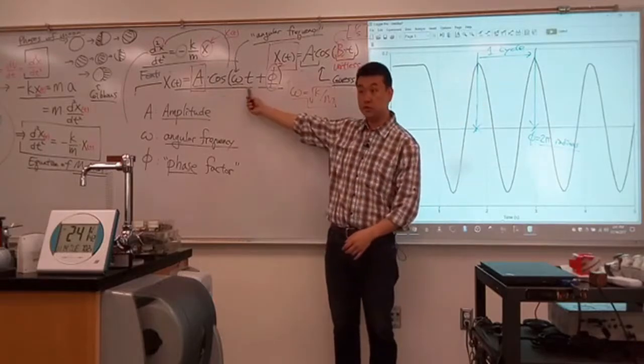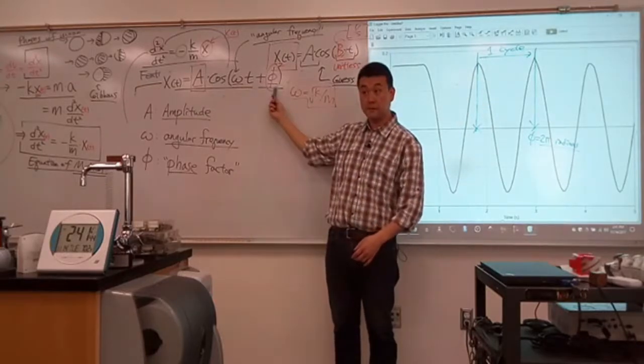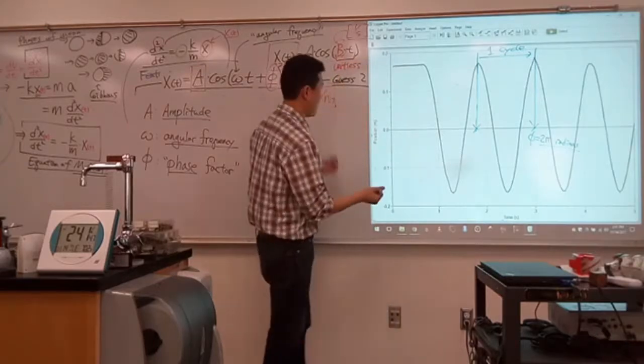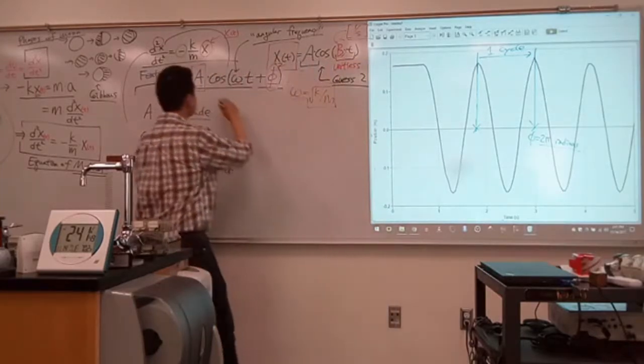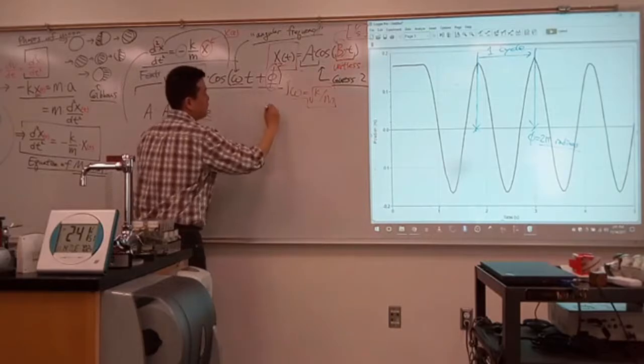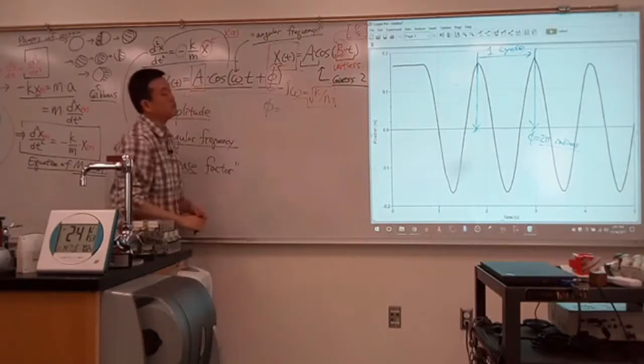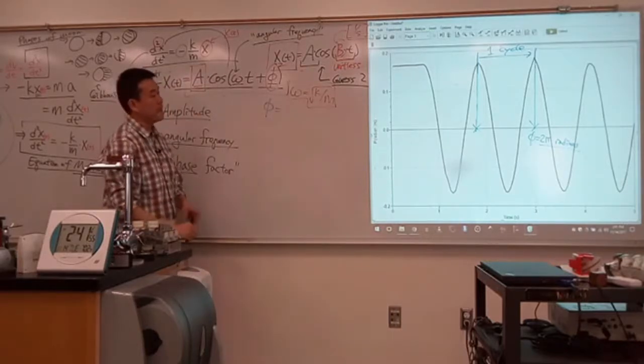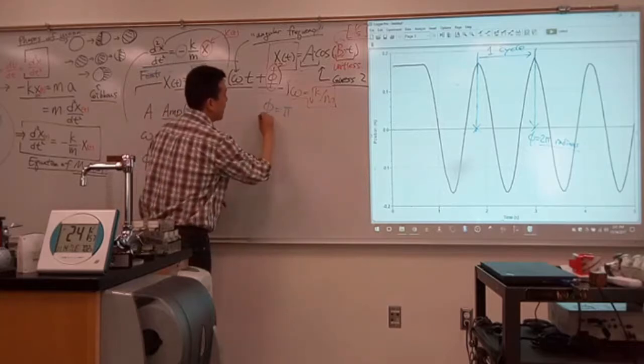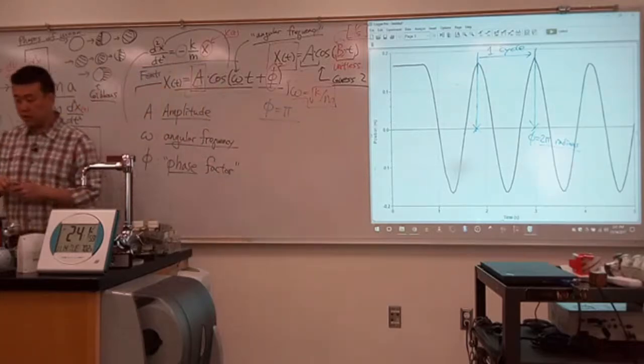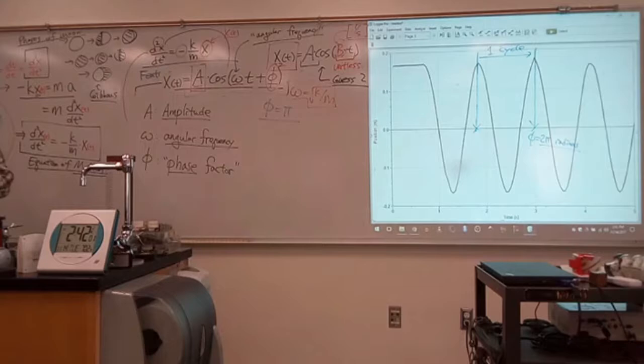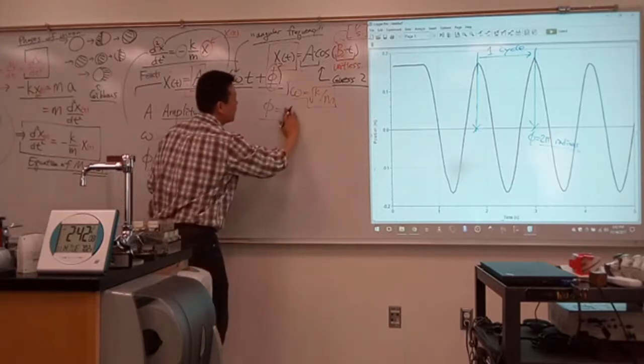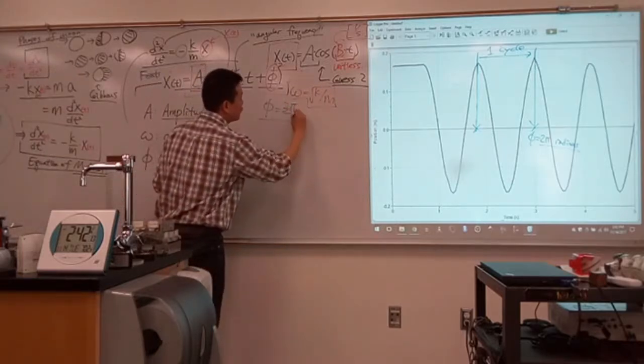When time t is equal to zero, what is this phi? In this solution here, if your phi was equal to 3 pi over 2, that would give you a solution that really behaves like a sine instead of cosine.